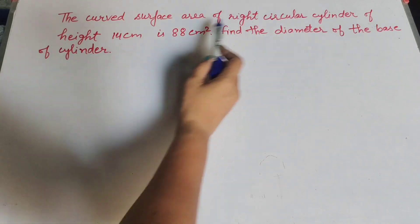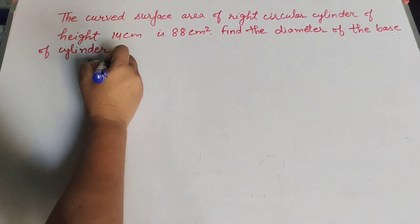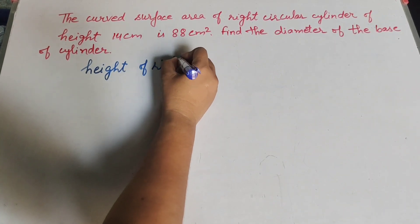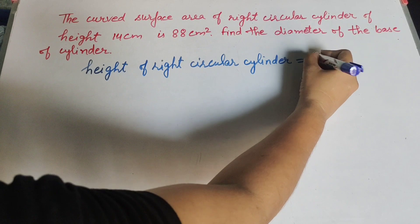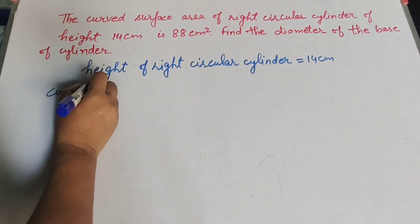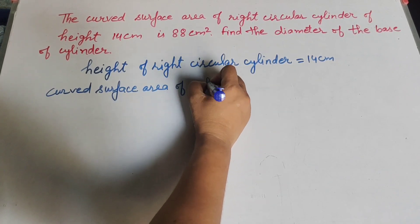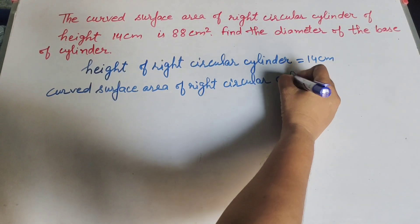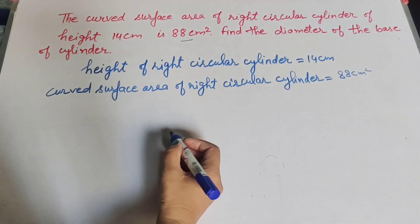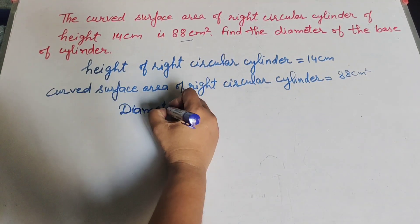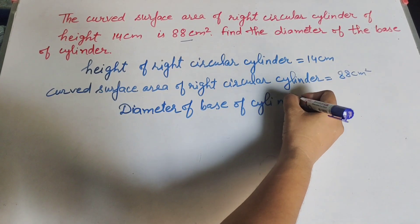In this question, given is the height of the right circular cylinder is equal to 14 cm, and the curved surface area of the right circular cylinder is 88 cm square. We need to find the diameter of the base of the cylinder.